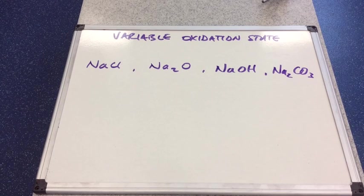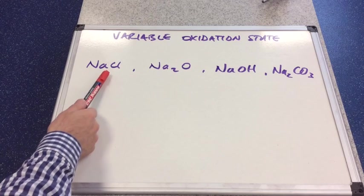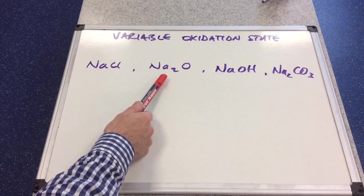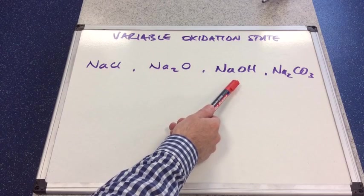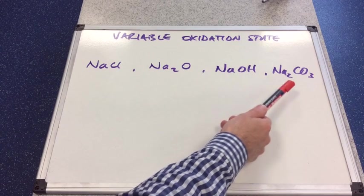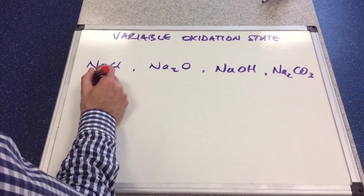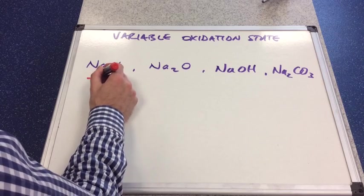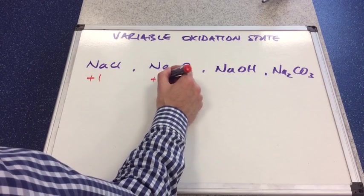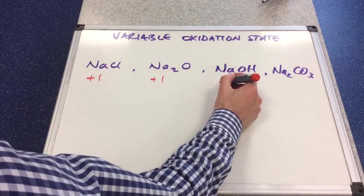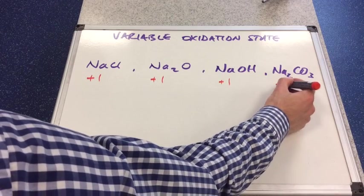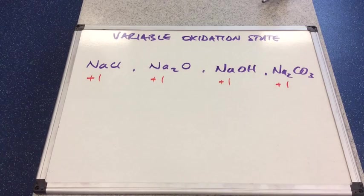I've got four compounds of sodium on the board: sodium chloride, sodium oxide, sodium hydroxide, and sodium carbonate. Sodium has a plus one oxidation state in all of its compounds. So is that variable? No, it's not — it's fixed.